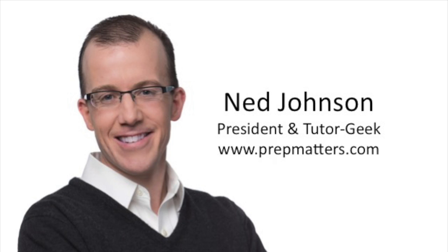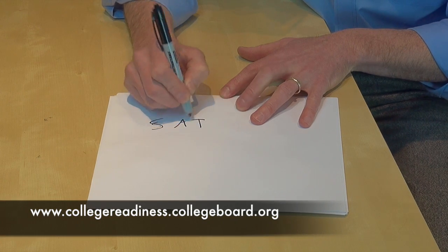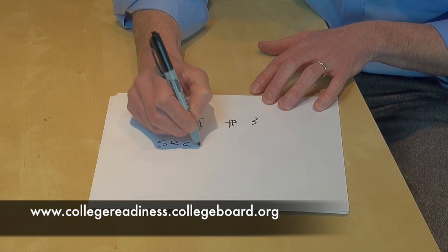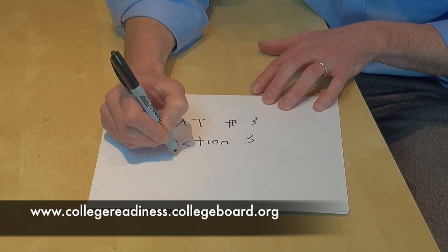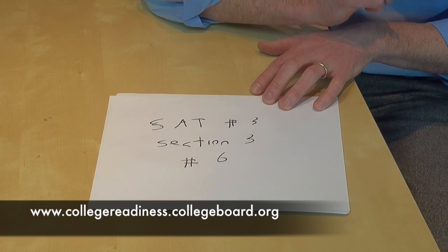We talked about doing our best on the SAT involves finding the easier way to do a problem rather than the harder way. If you want to go to SAT practice test number 3 section 3 question number 6, this problem is going to mimic that problem.